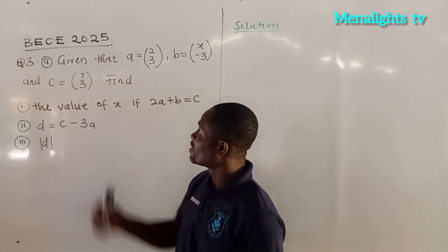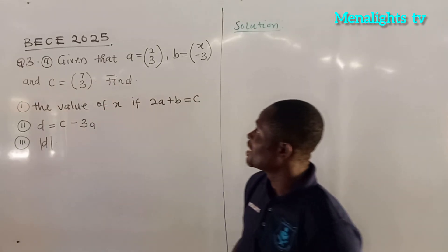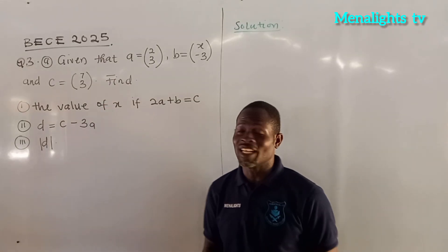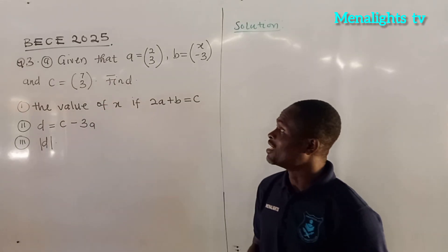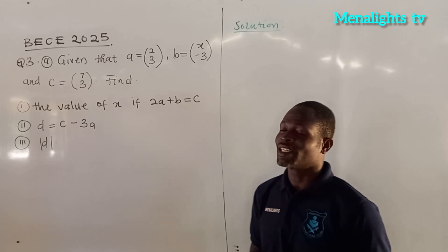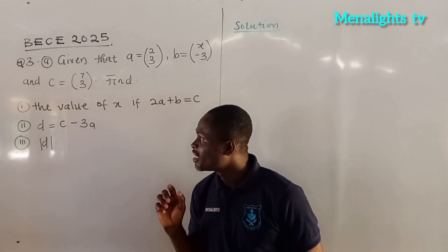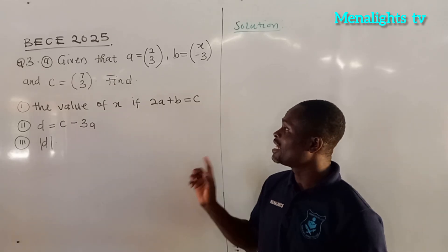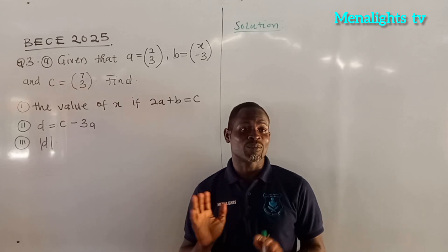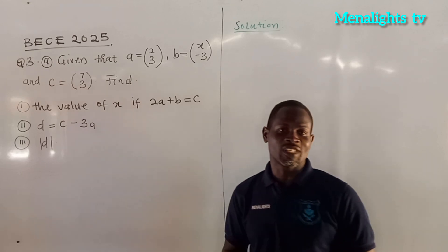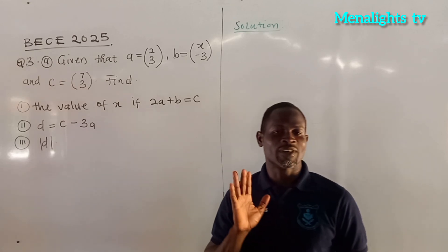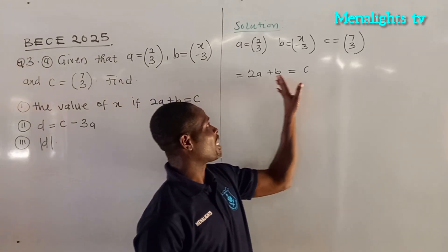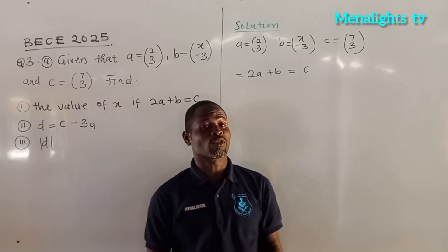The question we have is: given that a is equal to (2, 3), b is equal to (x, -3), and c is equal to 7, find the value of x if 2a plus b is equal to c. So we have to find the value of 2a plus b which equals c.